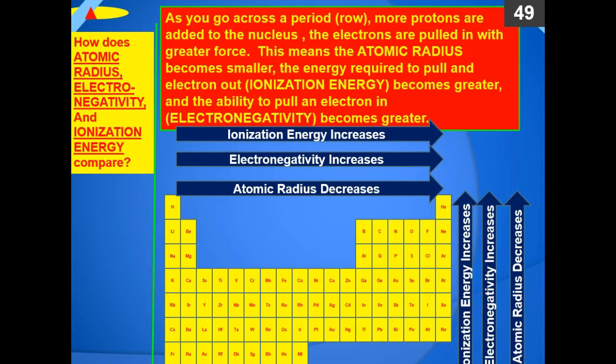As you go across the period, more protons are added to the nucleus. The electrons are pulled in with greater force. This means the atomic radius becomes smaller, the energy required to pull an electron out — ionization energy — becomes greater, and the ability to pull an electron in — electronegativity — also becomes greater.